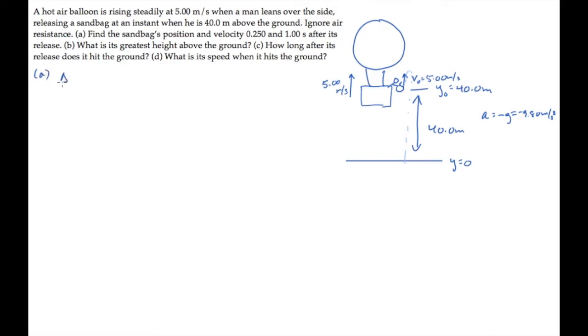Part A asks us to find the sandbag's position and velocity at two different times after its release. We'll find its position using this kinematic equation, which you can rewrite for the final position. And we'll find the velocity using this one. Now we just need to substitute the times into these equations.